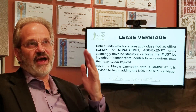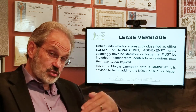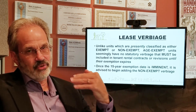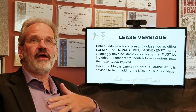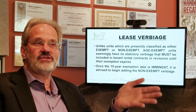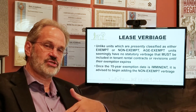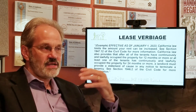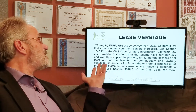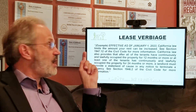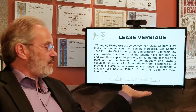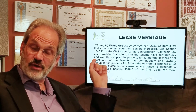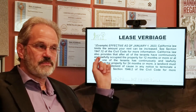Unlike properties that are either exempt or non-exempt, age-exempt properties do not currently require specific verbiage in their contracts. However, best practice as that age exemption is coming close to expiration is to put verbiage into your contracts — effective as of a certain date, for example 2023. This documentation must be written in a specific way using prescribed verbiage and must be in 12-point font.